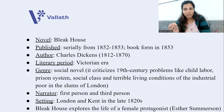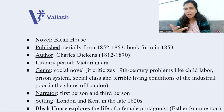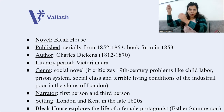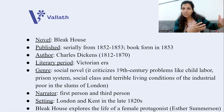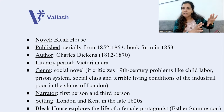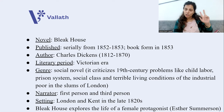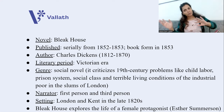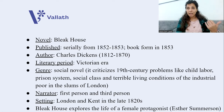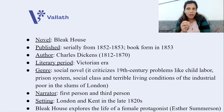Bleak House talks about contemporary England of that time — problems like child labor, the prison system, social class, and the terrible living conditions of the poor who left their homes and came to cities to work in factories. The narrator uses both first person and third person. The setting is London and Kent in the late 1820s.